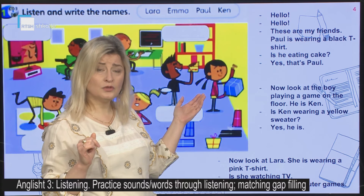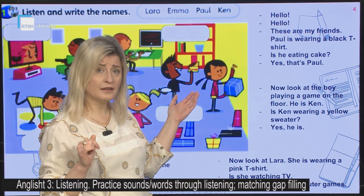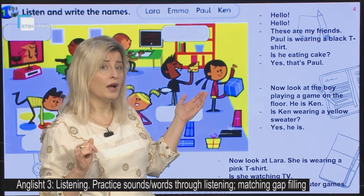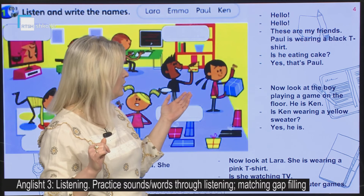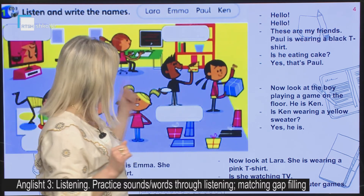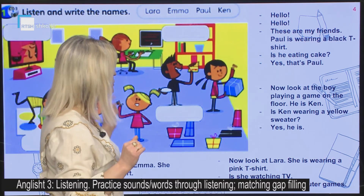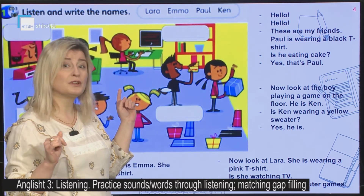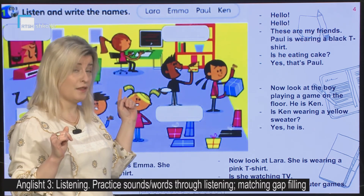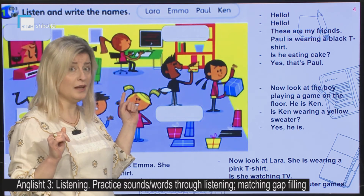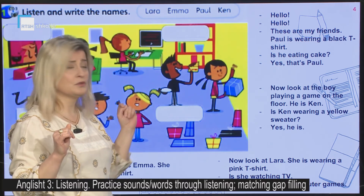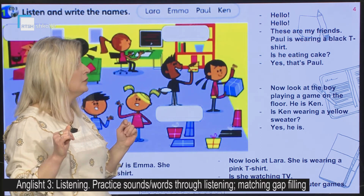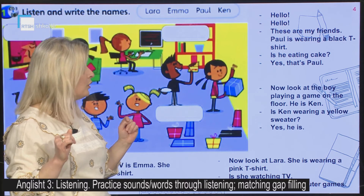Is he eating cake? A është ai duke ngrënë kek? Yes, that's Paul. Po, ai është Paul. Cili prej këtyre ka veshur bluzë me mëngë të shkurtra të zezë dhe është duke ngrënë kek? Pra, kemi të bëjmë me personajin këtu. Ky është Paul.